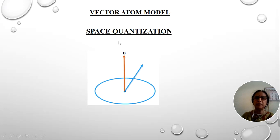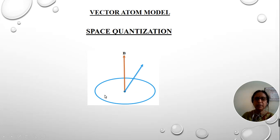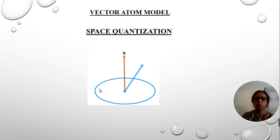So first let me explain space quantization. According to Bohr's theory, we know that the orbits are quantized regarding magnitudes only. This means the atoms will have different numbers of orbits, but it is not considered whether all the orbits are lying in the same plane or they are in different planes. Quantum theory demands that the orientation of these orbits in space must also be quantized — meaning all the orbits are not in the same plane; they are oriented in different directions.